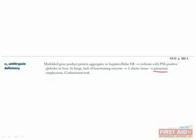Alpha-1 antitrypsin deficiency is a codominant genetic disease that results in a misfolded protein that accumulates in the endoplasmic reticulum of hepatocytes. Because the enzyme can't leave hepatocytes to travel to its usual site of protective action in the lungs, panacinar emphysema develops. Liver biopsy shows PAS-positive globules. The buildup of material in hepatocytes can also lead to LFT abnormalities. Think about this disease in a non-smoker who develops severe emphysema in their 30s or 40s.